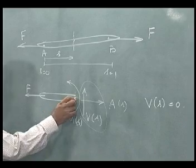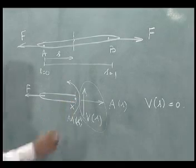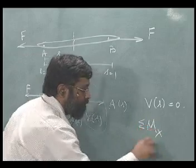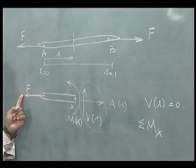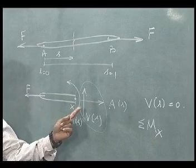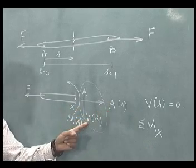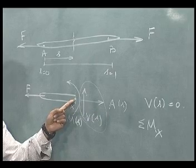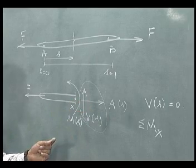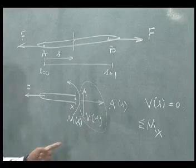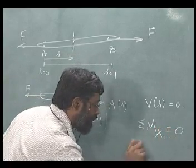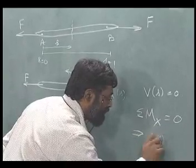If I take moment about this, let me call this as capital X. Notice F is not going to take part in the moment equation. A and V by the very fact that they are acting at this particular point will not take part which means I will have only Ms available equals 0 implies M(S) equals 0.